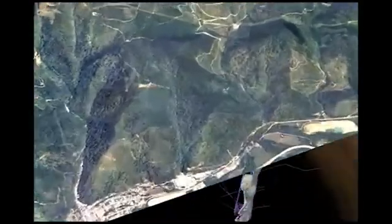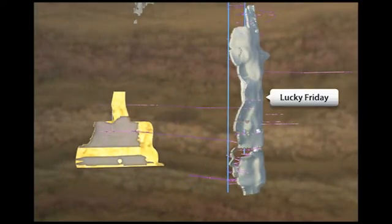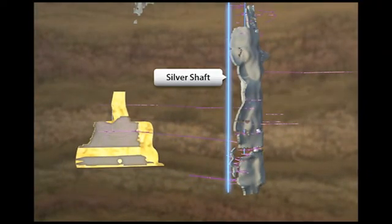As we drop under the surface, what you're seeing is the main Lucky Friday vein on the right, with the silver shaft in blue dropping down to 6,200 feet.